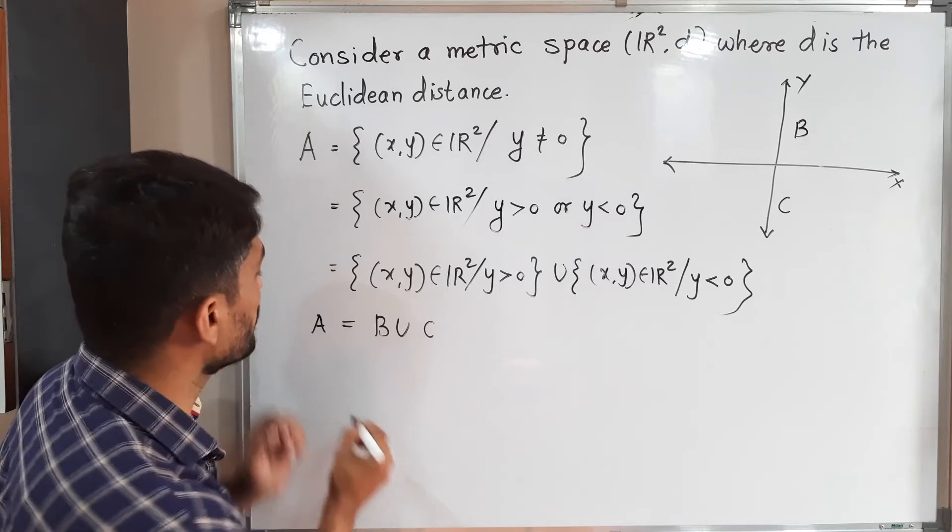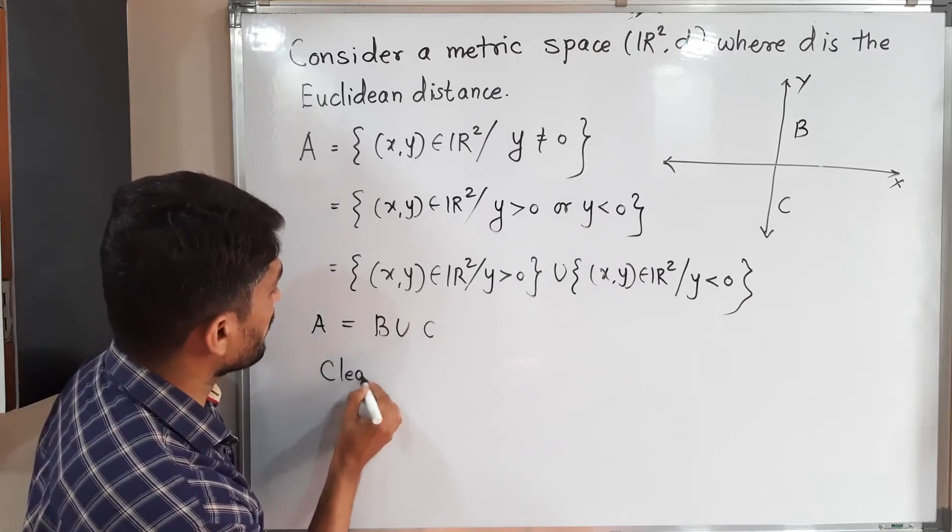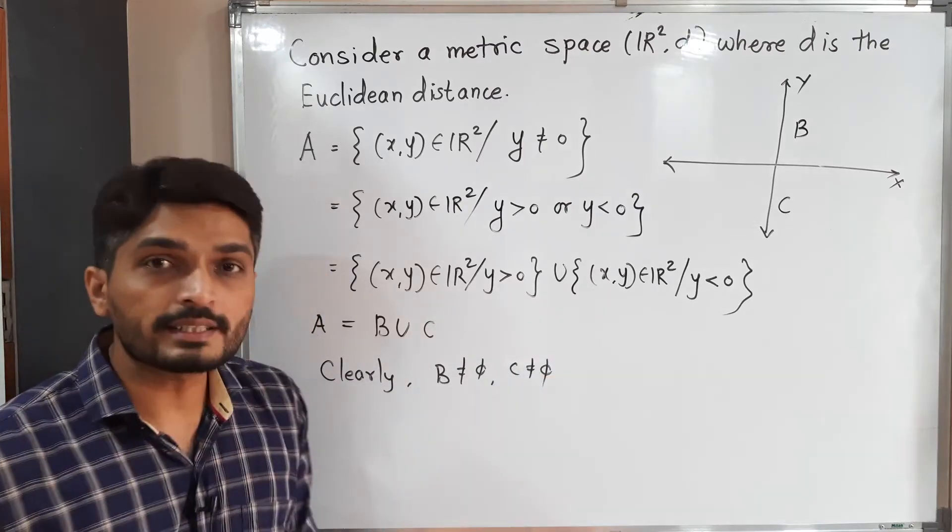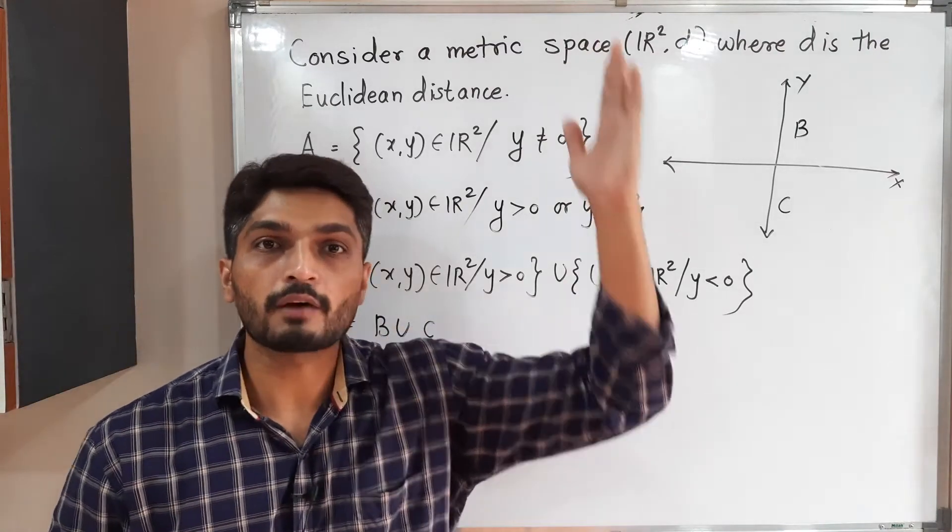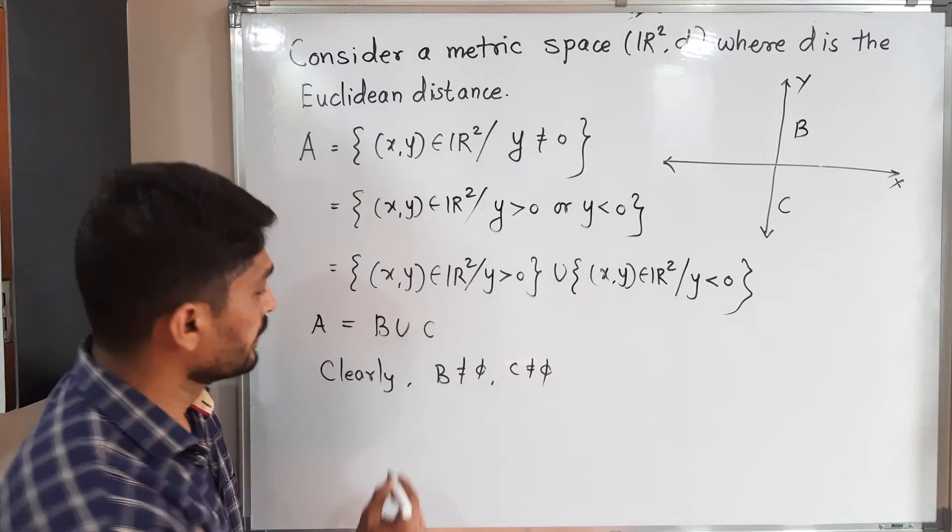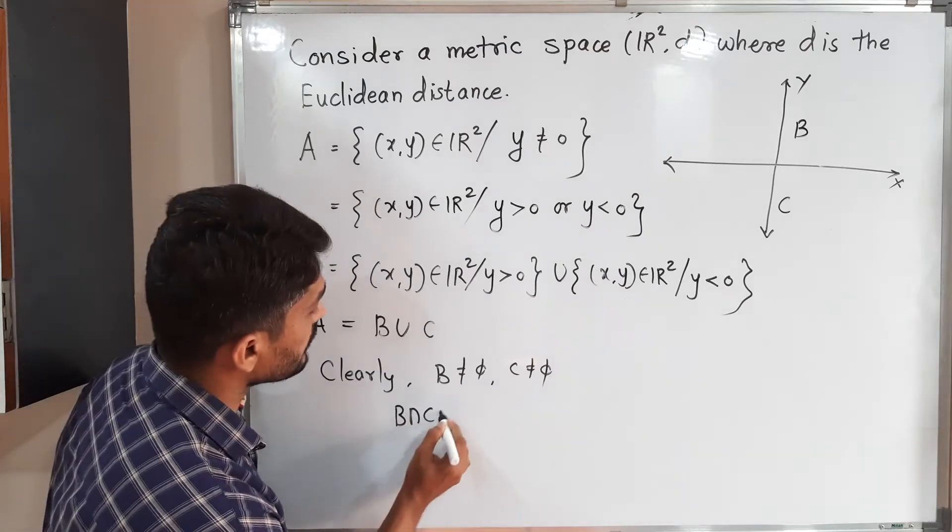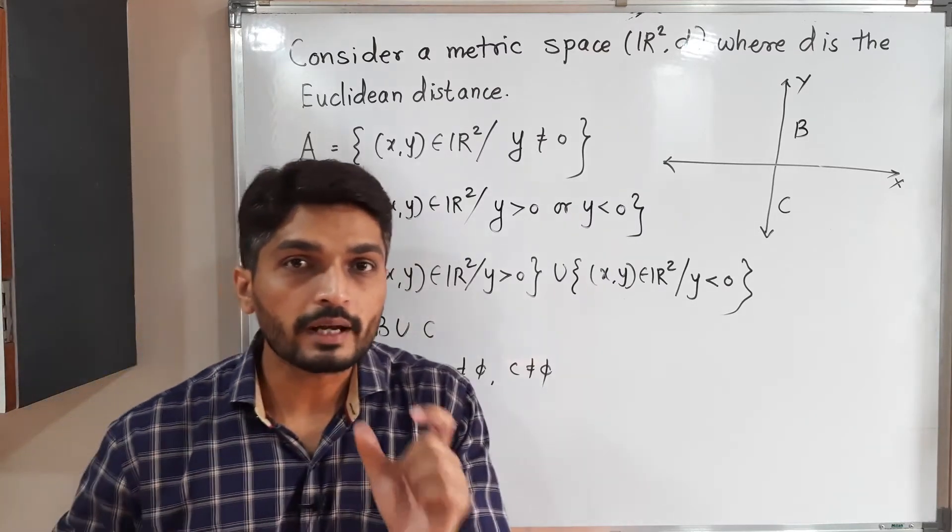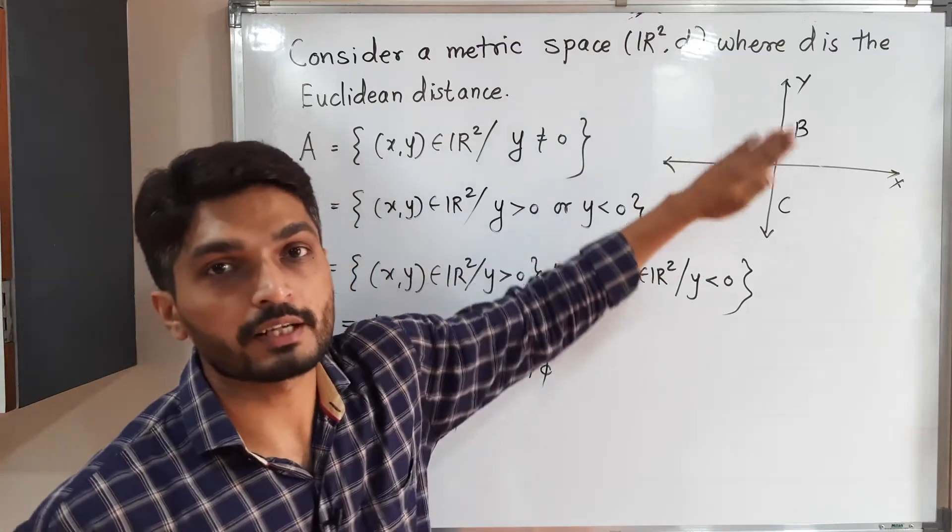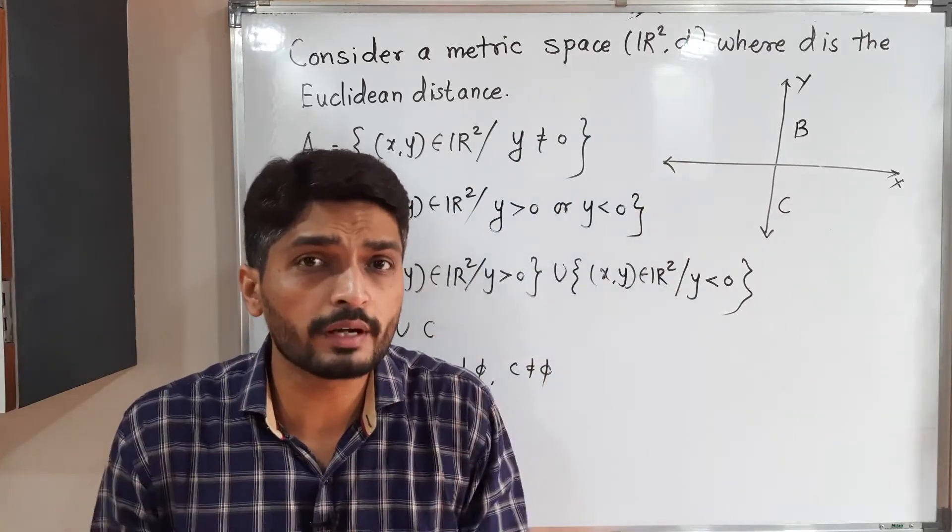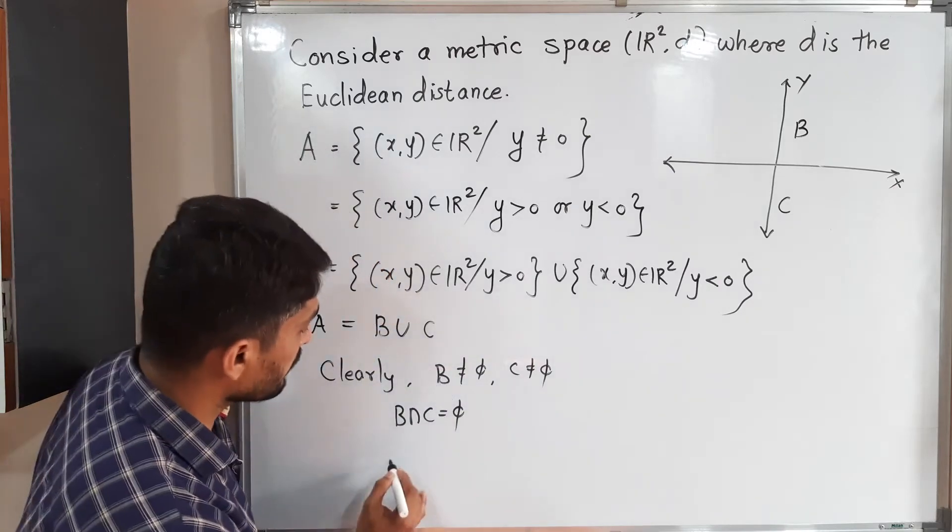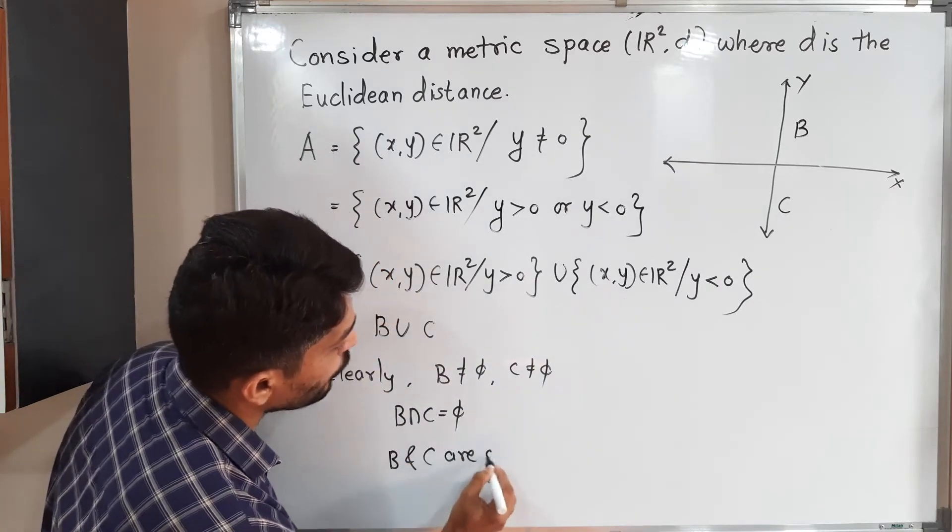We get A = B ∪ C. Clearly, B ≠ ∅ and C ≠ ∅. Obviously, since B is nothing but the upper half of the plane, many infinite elements are there. C also has infinite elements. These are non-empty sets. B ∩ C = ∅. We can write this because B contains the upper half, C contains the lower half, and the middle line x-axis is already removed, so there is no point common between B and C.